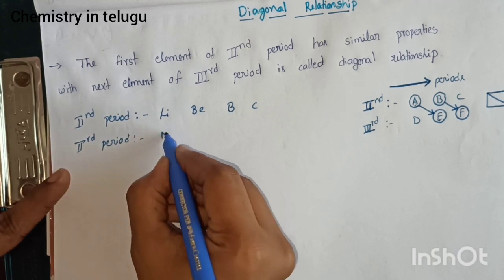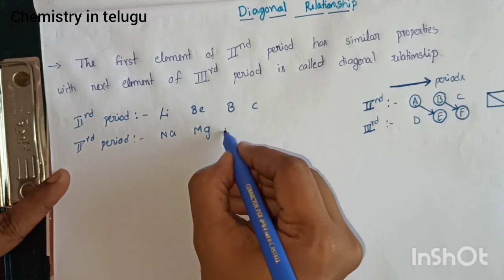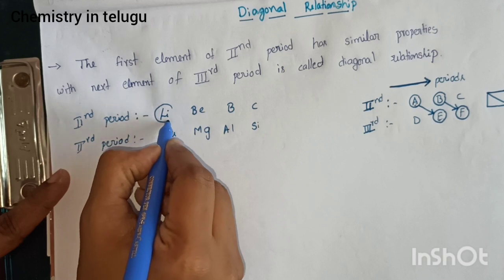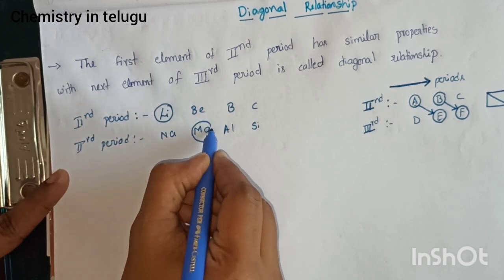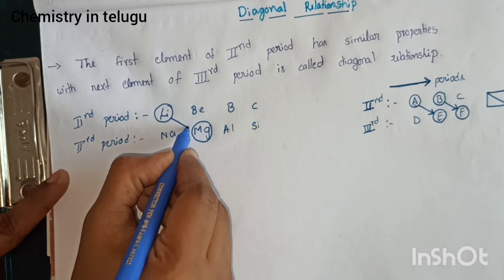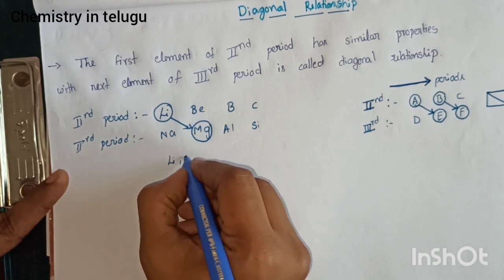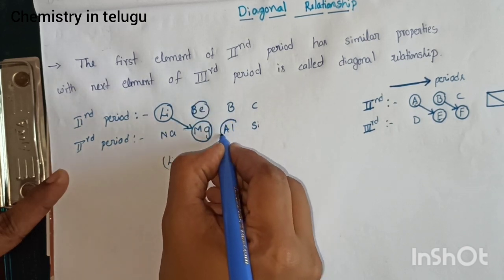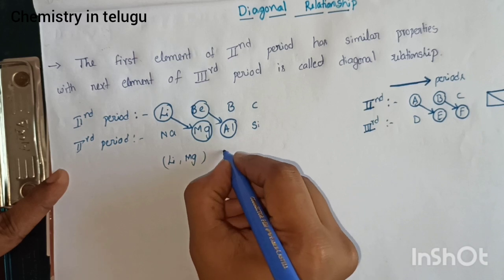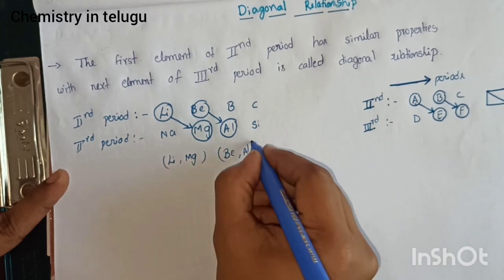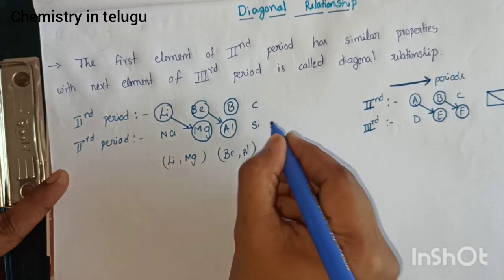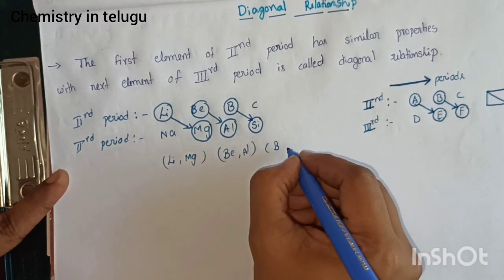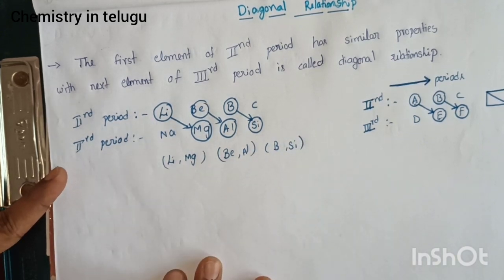The elements are: lithium, sodium, beryllium, magnesium, aluminum, and silicon. Lithium and magnesium are in the diagonal relationship. Beryllium and aluminum are in the diagonal relationship, and beryllium and silicon are also in the diagonal relationship.